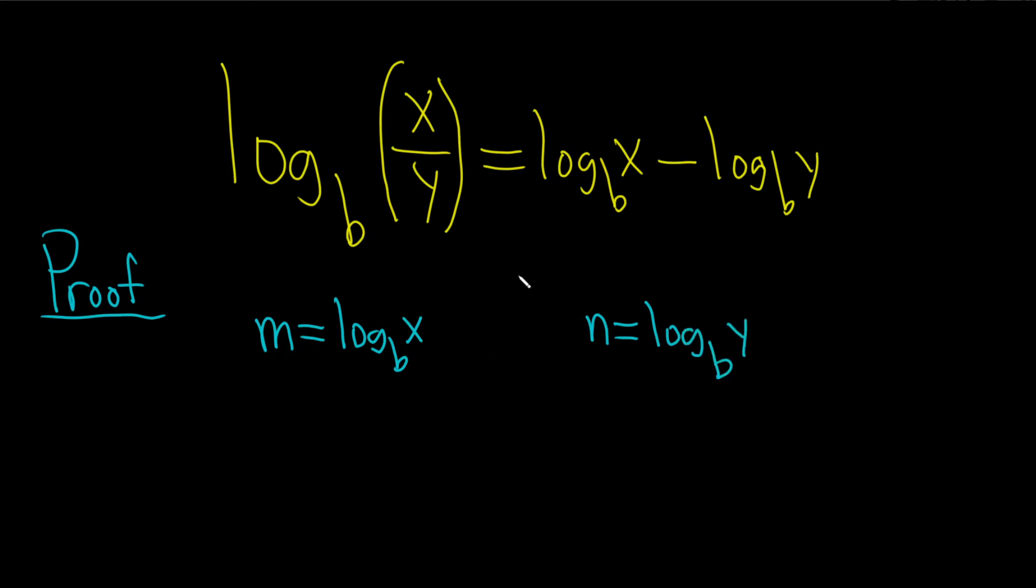These are logarithmic equations, so let's turn them into exponential ones. b is the base, so b to the m equals x. Right, that's how you work with log. So b to the m equals x. Here it's b to the n equals y, so b to the n equals y.